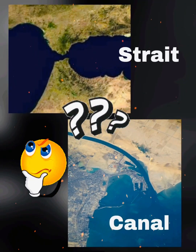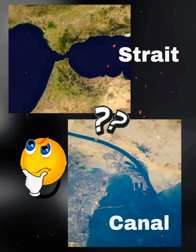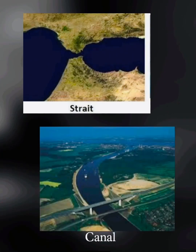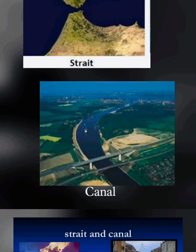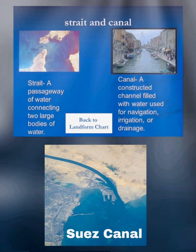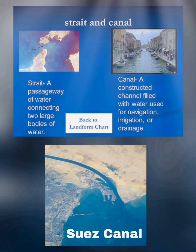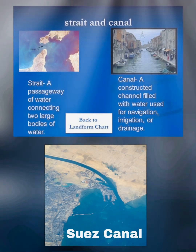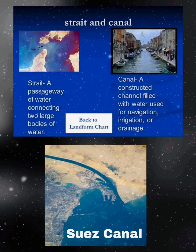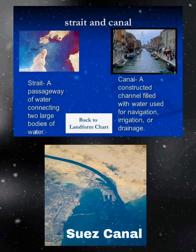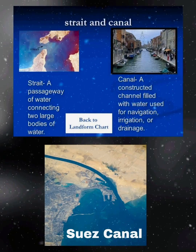But is there any difference between a strait and a canal? Yes — a strait is similar to a canal cutting through a land mass, but a strait is formed naturally, whereas canals are built by humans and used for navigation, irrigation, or drainage. An example of a canal is the Suez Canal, which is the most important canal in our world.